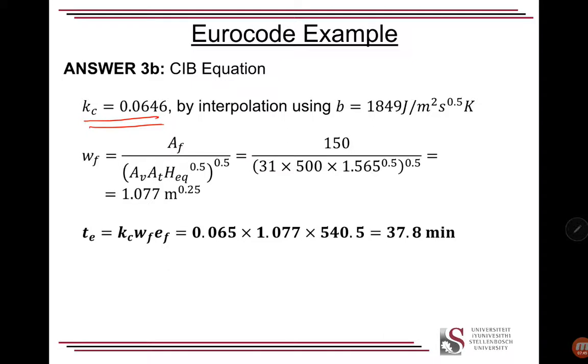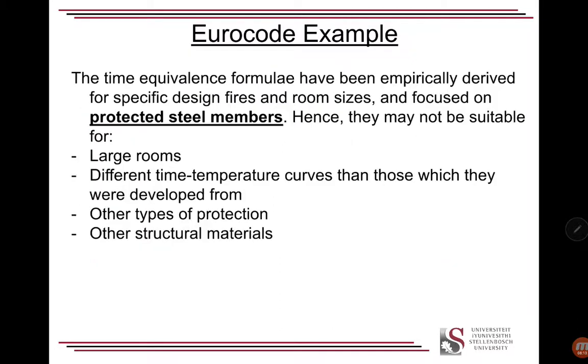But let's have a look at the CIB equation. We get our kc value from interpolation using the same thermal inertia value, ventilation area, and we get our equivalent standard fire exposure. And that comes in at 37.8 minutes. So now, this is closer to what we expected. If we look at the fire exposure and compare the graphs, it seems reasonable. But obviously, you'll find depending on the shape of the time-temperature curve, the fuel load, ventilation, various other factors, you may have a better or worse fit.